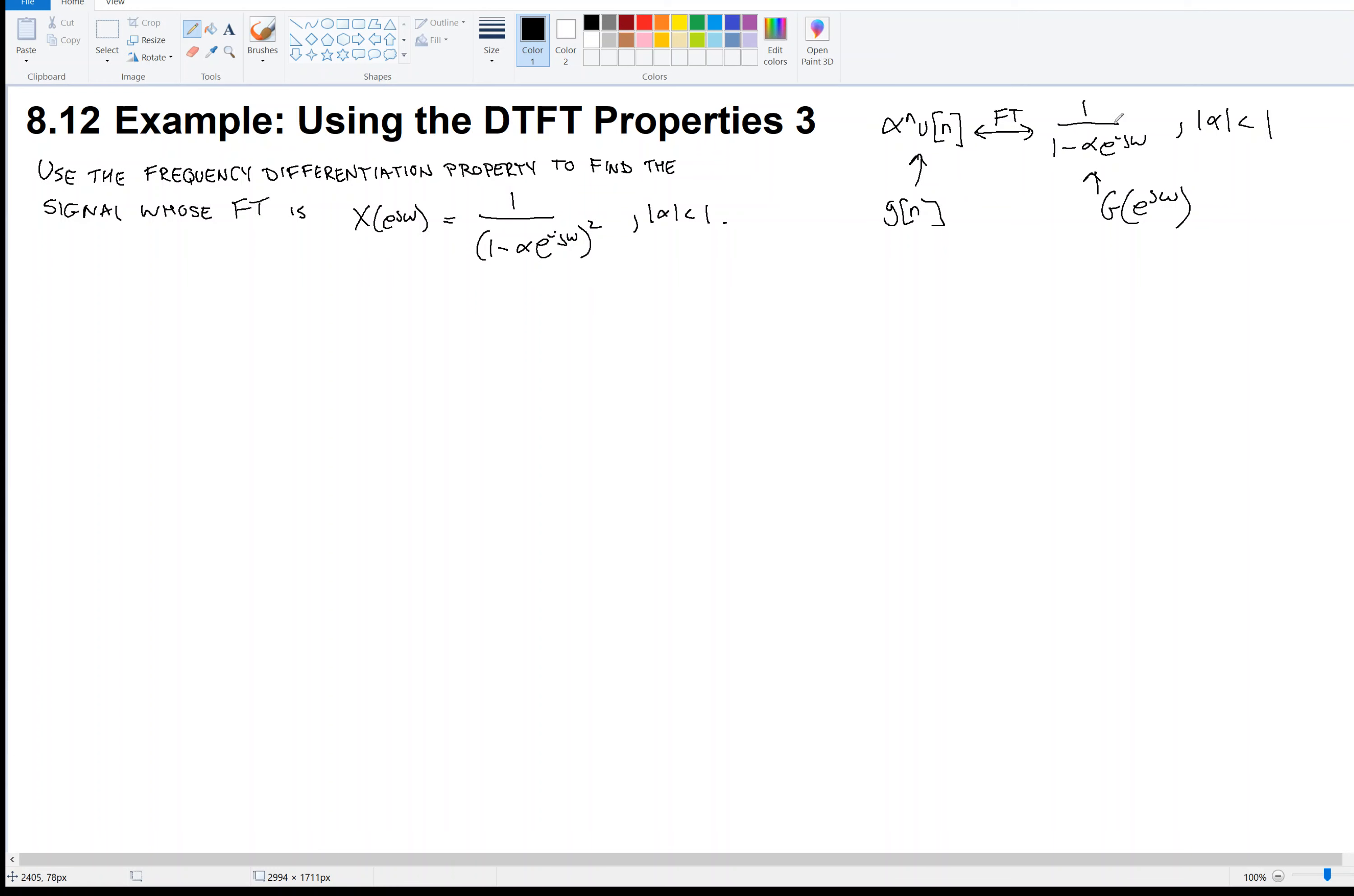Here's the frequency g of e^(jω), we'll call it. Do you know what happens to the denominator of a quotient when you take its derivative? The denominator becomes squared, and so then that would start to resemble X(e^(jω)). That's the idea in this problem.